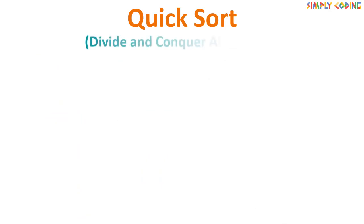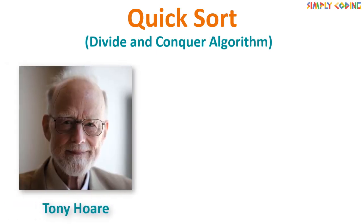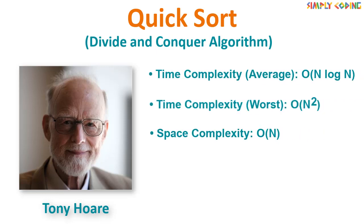Quicksort is a divide and conquer algorithm. It was developed by British computer scientist Tony Hoare. It is so named because for large n, it can be somewhat faster than merge sort and other common sorting algorithms. It requires time proportional to n log n on average to sort n items. It is an in-place and stable sorting algorithm.